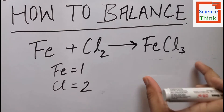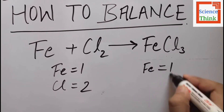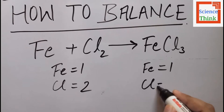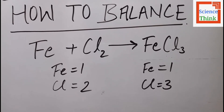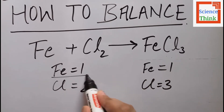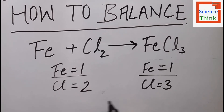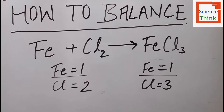On the product side we have one iron atom and three chlorine atoms. You can see that on both sides the iron atoms are equal, but on the reactant side we have two chlorine atoms and on the product side we have three chlorine atoms, so we have to balance the chlorine atoms.